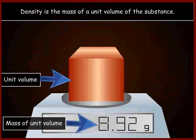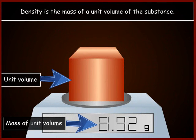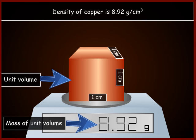The density is defined as the mass of a substance having unit volume. For example, a copper cube having length, breadth, and height of 1 cm each has mass of 8.92 g.